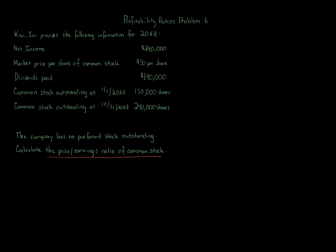We are looking at the price earnings ratio. The price earnings ratio on common stock measures a company's future earnings prospects. The formula for calculating this: we take the market price per share of common stock over the earnings per share of common stock.